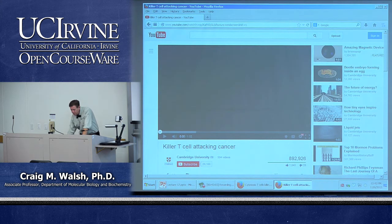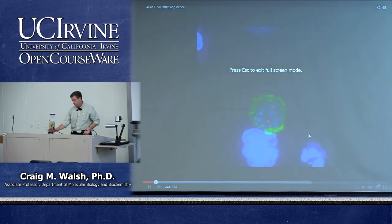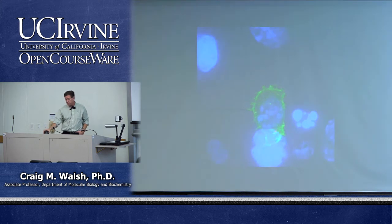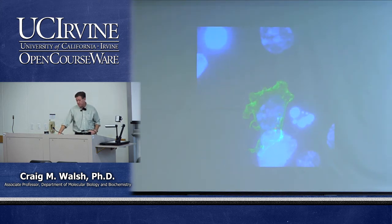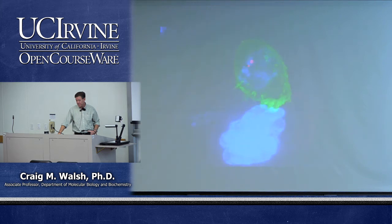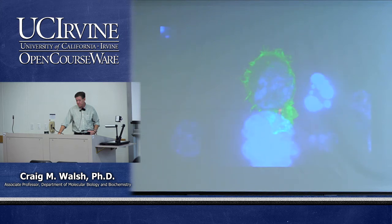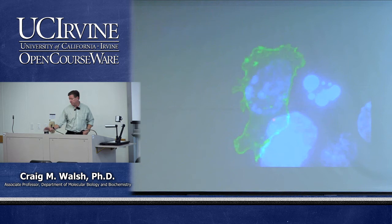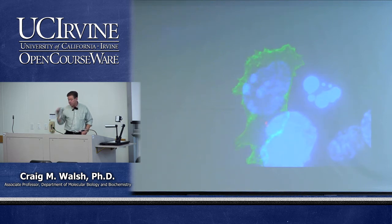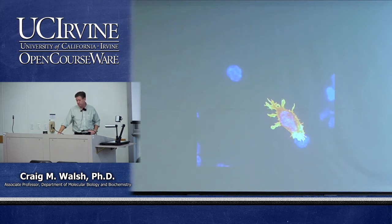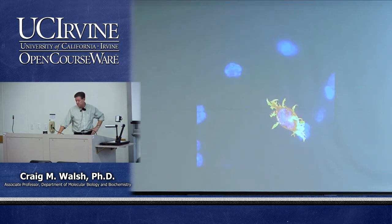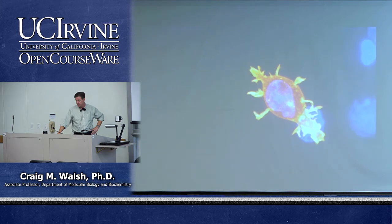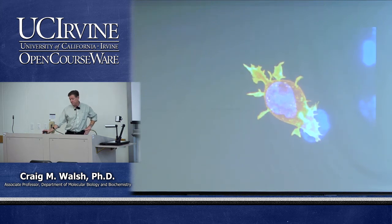Here you can see a killer T cell of the immune system attacking a cancerous cell. The killer cell recognizes the cancerous cell — the two cells move around and contact the target — then the killer cell spreads out over the cancerous cell. Passing the video through a filter makes the killer cell look yellow, allowing us to really see how it focuses on the cancer cell. These killer T cells are constantly hunting down dangerous cells throughout the body and destroying them.